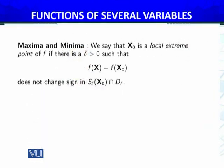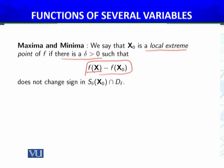Let us define maxima and minima for functions of several variables — it is essentially the same as for one variable. We say x₀ is a local extreme point of f if there exists δ > 0 such that f(x) − f(x₀) does not change sign in a small neighborhood of x₀, i.e., the δ-neighborhood of x₀ intersected with the domain.